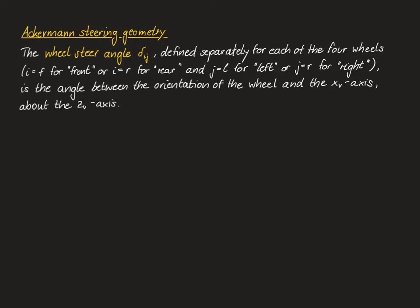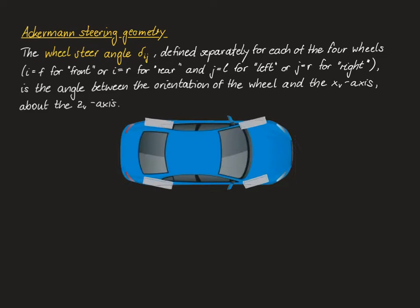So let's start with the two basic definitions. The wheel steer angle is denoted with delta_ij, where the first index i stands for either i equals f for front or i equals r for rear, and the second index stands for either j equals l for left or j equals r for right. It is the angle between the orientation of the wheel and the xv axis about the zv axis.